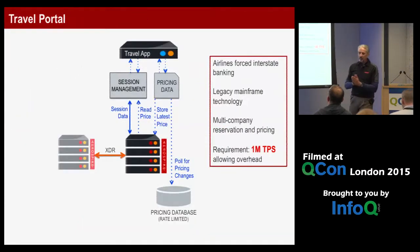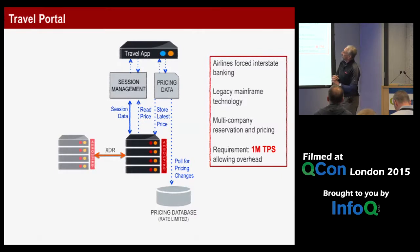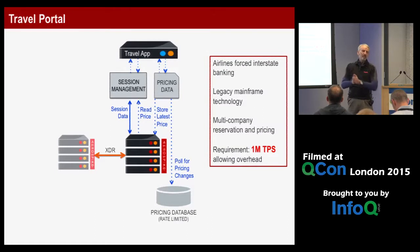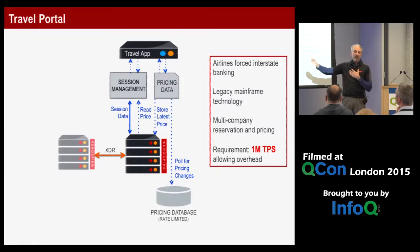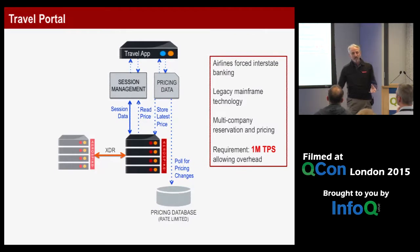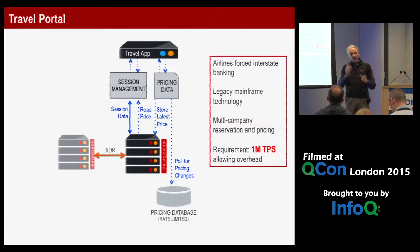Another example is a travel portal like Kayak. You request a flight — say Heathrow to Berlin — and the portal queries the airline for a price. Since that quote costs money, they cache it for a time period so the next requester within that window doesn't trigger a second paid query. With many pairs of places and dates, these interactions total millions — on the order of a million transactions per second.